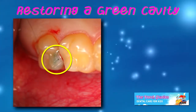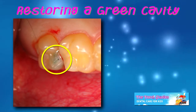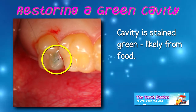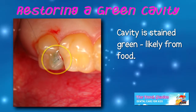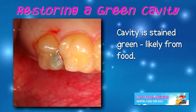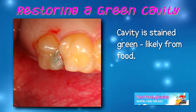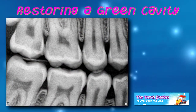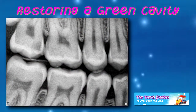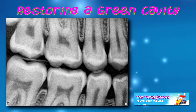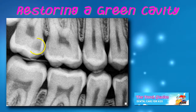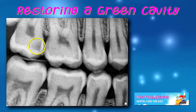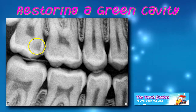Observe the large green area of this tooth — this is a cavity. The cavity has become stained, probably from something this person has eaten, but no one knows for sure. This radiograph of the same tooth is located in the upper right corner, and there is a large darker area on the right side of the tooth. This is the cavity.